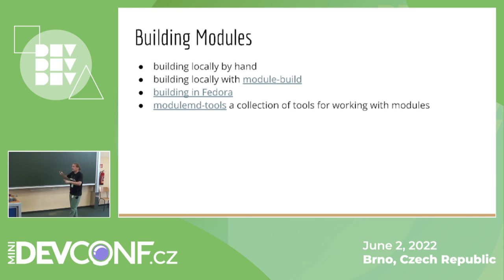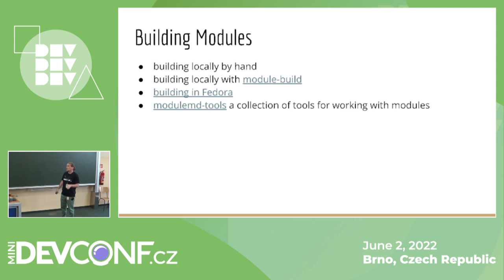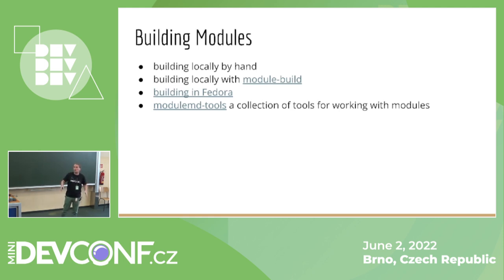Building modules: you can take any RPMs, put them in a directory, add a YAML file, run createrepo_c and you have a module. For building locally, we have a tool called module-build — the first version was released in January or February and we're improving it, adding building from source SRPMs. There's official Fedora documentation available. If you see something missing, please write to us on the Fedora mailing list or to the modularity team — we want input from the community.